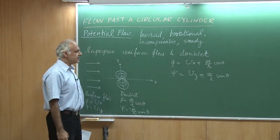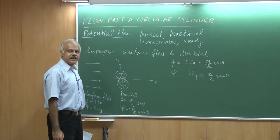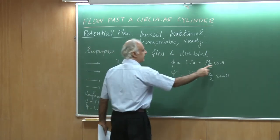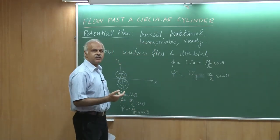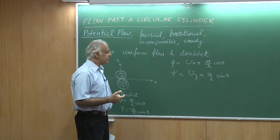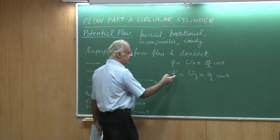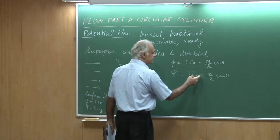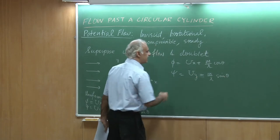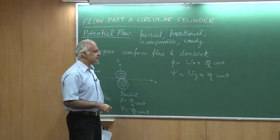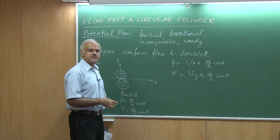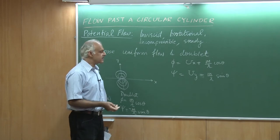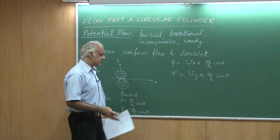If I want to get the equipotential lines, I have to set this function equal to a constant, and by changing the value of the constant I get different potential lines. Similarly, to get different streamlines, I take the stream function and keep it equal to a constant — different constants give me different streamlines.